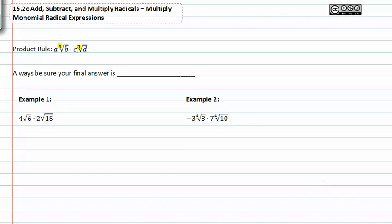From there, we can multiply the leading values, or the ones in front of the radical, together to get a·c, nth root of, and then we can multiply the part inside the radical together, b·d.